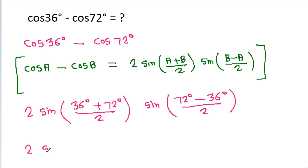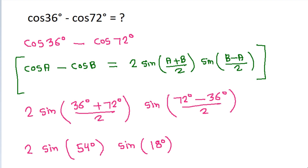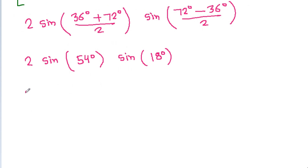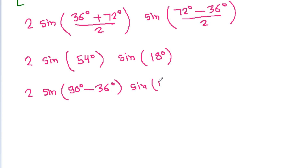Simplifying, 36 minus 72 is negative 36, divided by 2 gives negative 18 degrees — but the expression gives us sin(54°) since we take the magnitude. And (72 minus 36)/2 equals 18 degrees. So we have 2 times sin 54 degrees times sin 18 degrees.